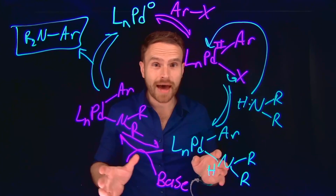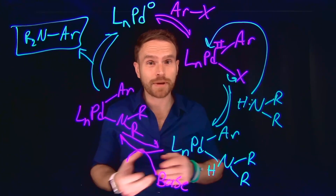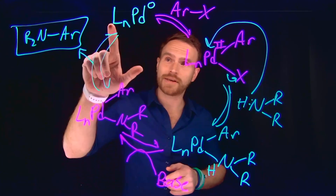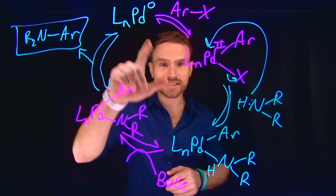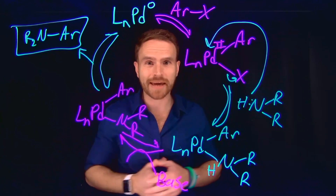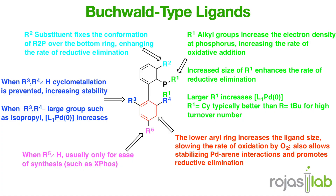Primary amines versus secondary amines or even tertiary amines react very differently, and a lot of this has been overcome via the design of different ligands that support the palladium catalysts. Speaking of ligands, let's talk about the role of what are known as Buchwald-type ligands.